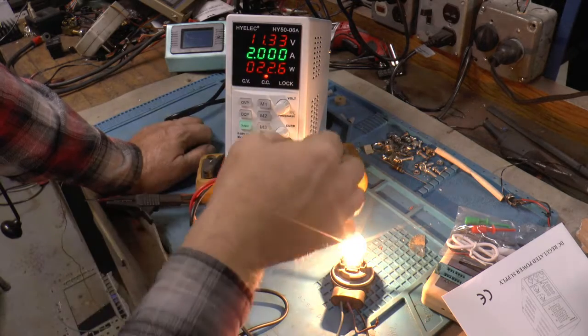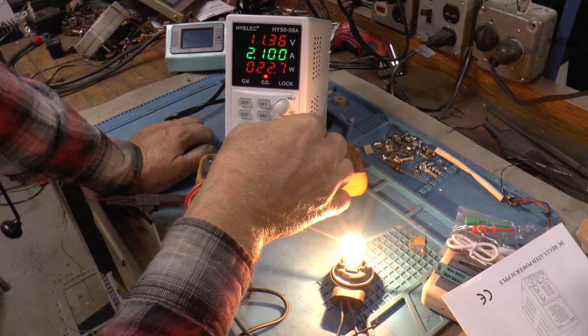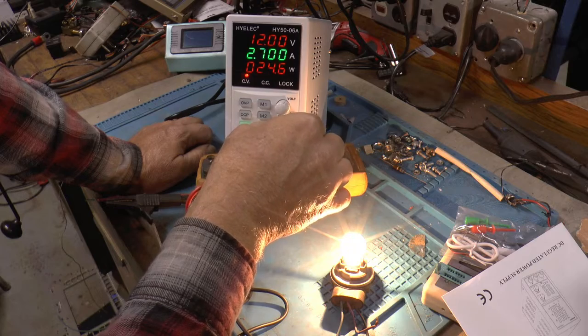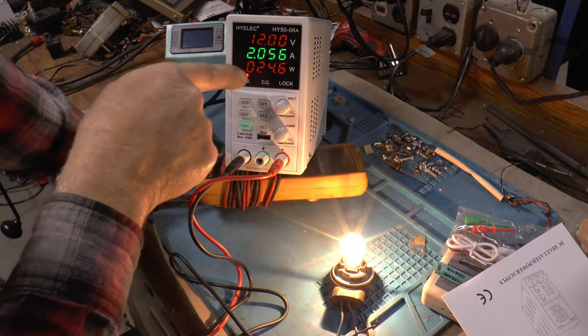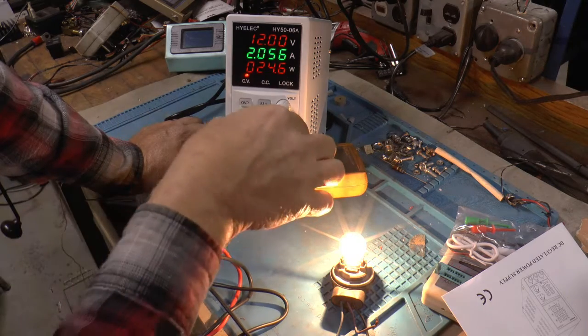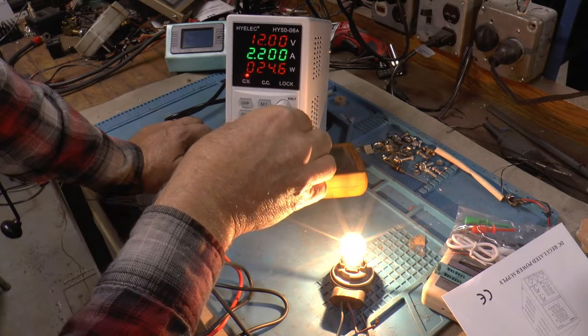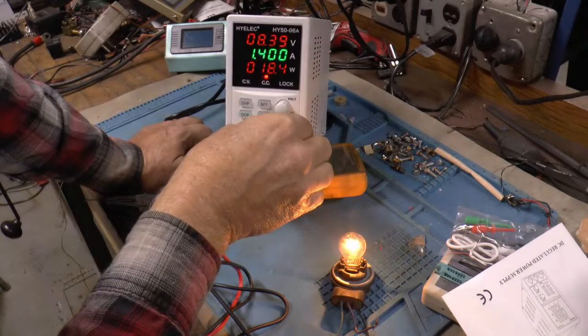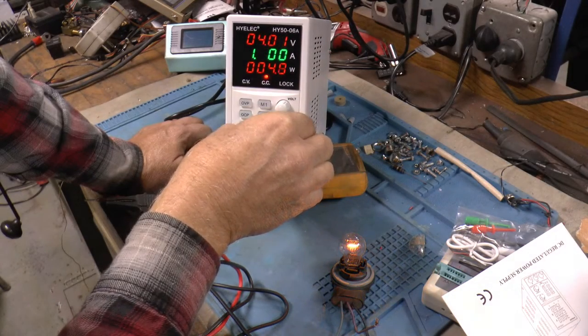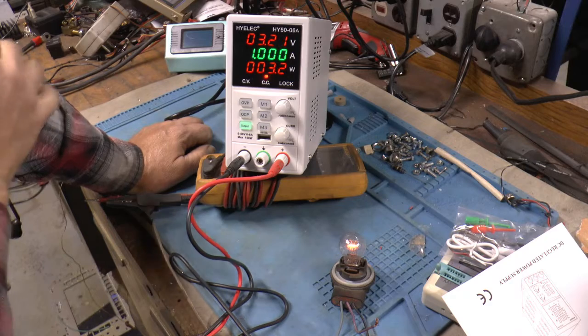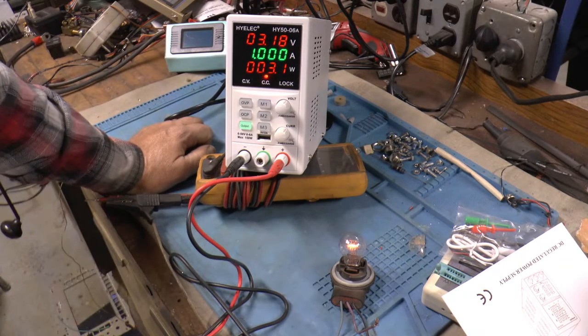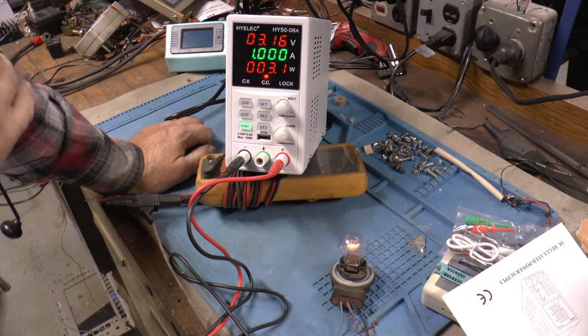So it's on constant current. So it uses 2.056 amps. It's nice you can turn it down on the fly. So if I limit it to 1 amp, it's at 3 volts. Alright.